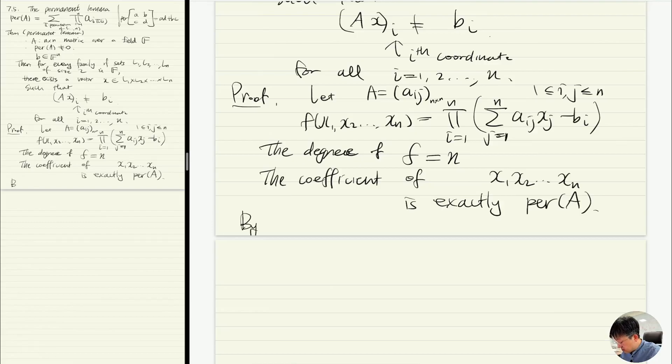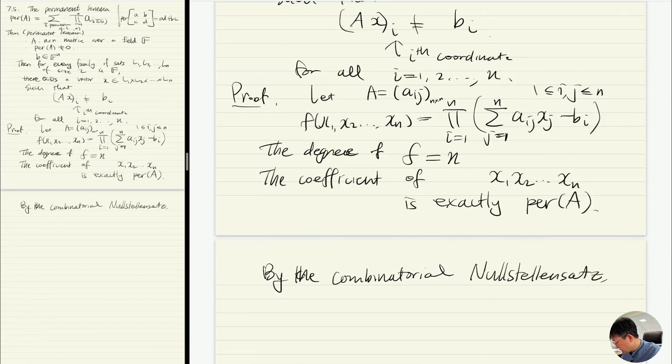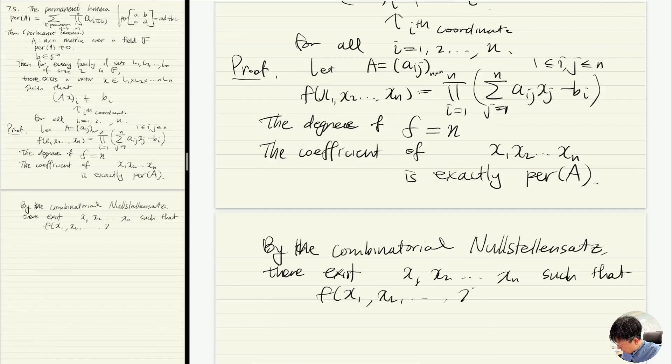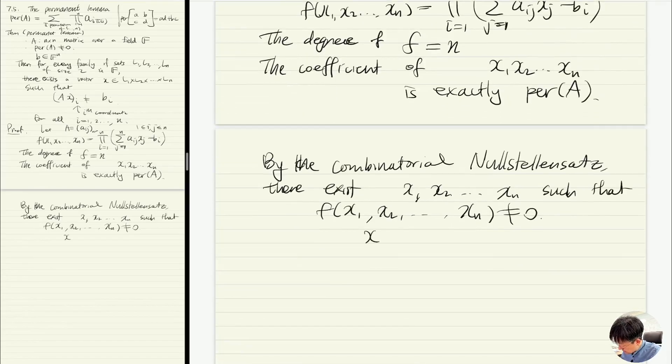So by the combinatorial nullstellensatz, there exists x1, x2, ..., xn such that f of x1, x2, ..., xn is non-zero, and x_i is in L_i. And that's exactly what we want.